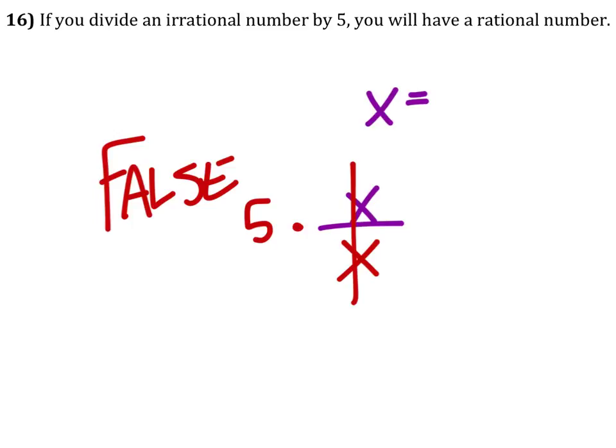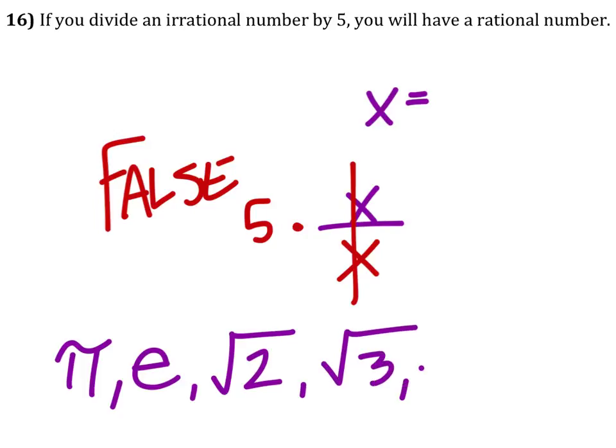Some examples of irrational numbers are pi, Euler's constant, the square root of 2, the square root of 3, the square root of 5. Any square root of any non-perfect square would give you an irrational number.